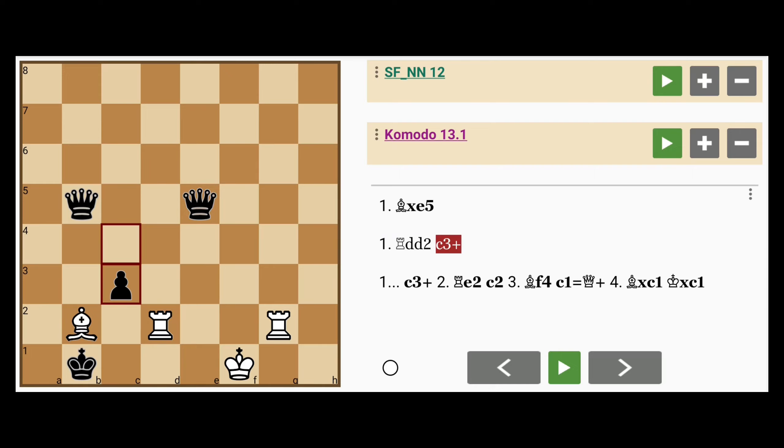Because c3 discovered check, rook on the d file to e2 intervening and saving the rook at least. Queen to d3, the rook is pinned, so the queen on e5 is safe.